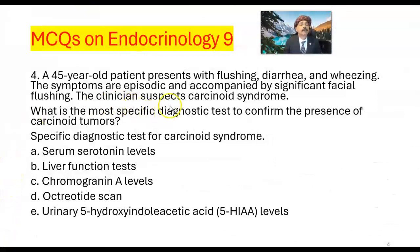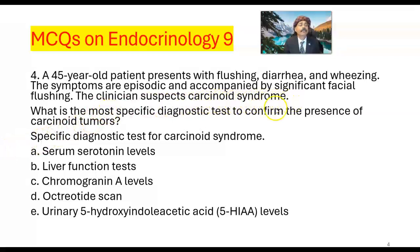Question number four. A 45-year-old patient presents with flushing, diarrhea, and wheezing. The symptoms are episodic and accompanied by significant facial flushing. The clinician suspects carcinoid syndrome. What is the most specific diagnostic test to confirm the presence of carcinoid tumors? We are looking for the specific diagnostic test for carcinoid syndrome.